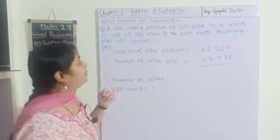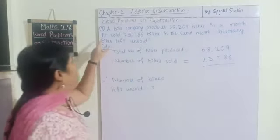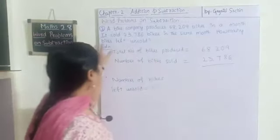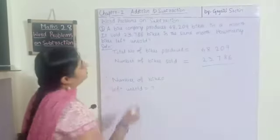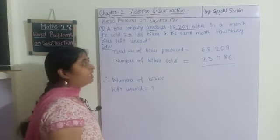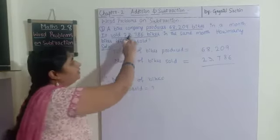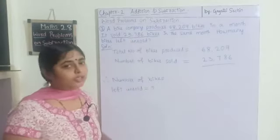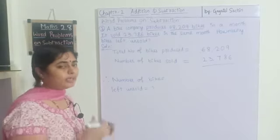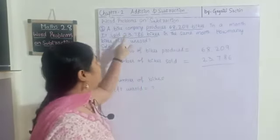Let's see the second word problem. A bike company produces sixty-eight thousand two hundred and nine bikes in a month. It sold twenty-three thousand seven hundred and eighty-six bikes in the same month. So how many bikes were left unsold? We have to find the number of unsold bikes — the bikes left in the company. So we have to subtract the number of sold bikes from the total number of bikes.